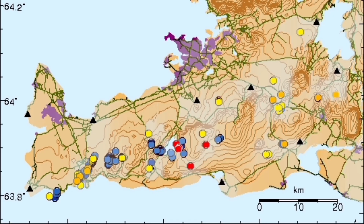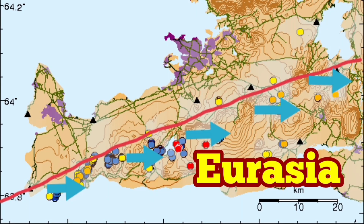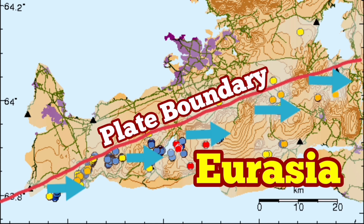The earthquakes, as I mentioned, are like a shaking of a ketchup bottle — it makes it possible to flow. So when we plot these earthquakes, we see that the pull is toward Eurasia, from Eurasia. That is a plate boundary.